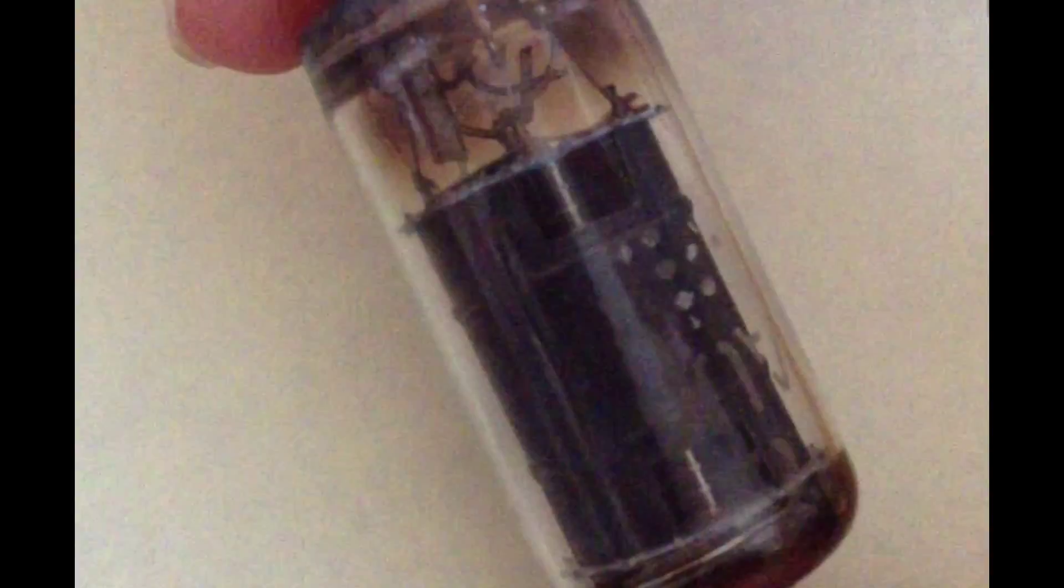So to build this tube socket, first you need to find the tube that you're going to use. So I'm going to use this 6AU6 tube with 7 pins.